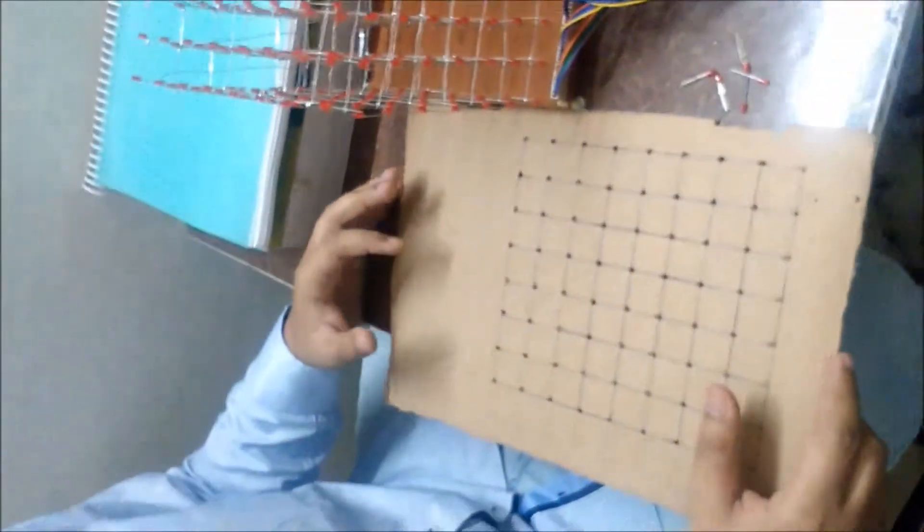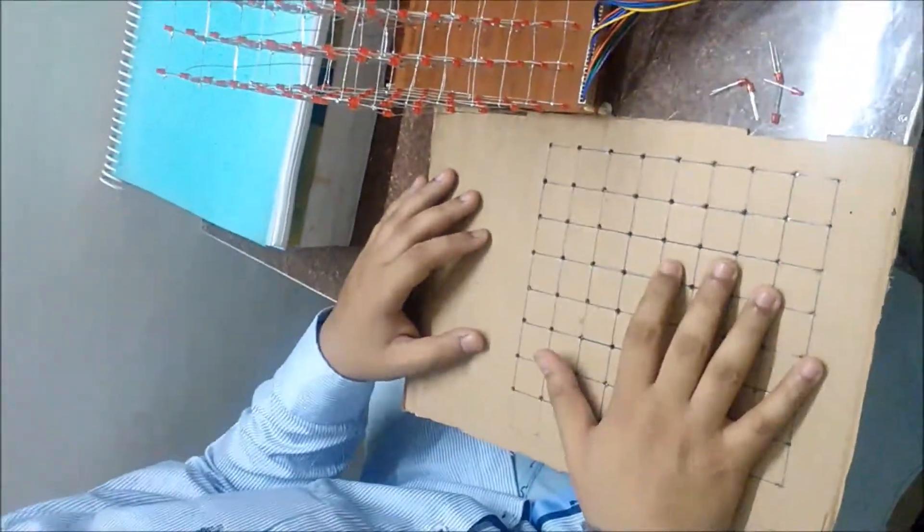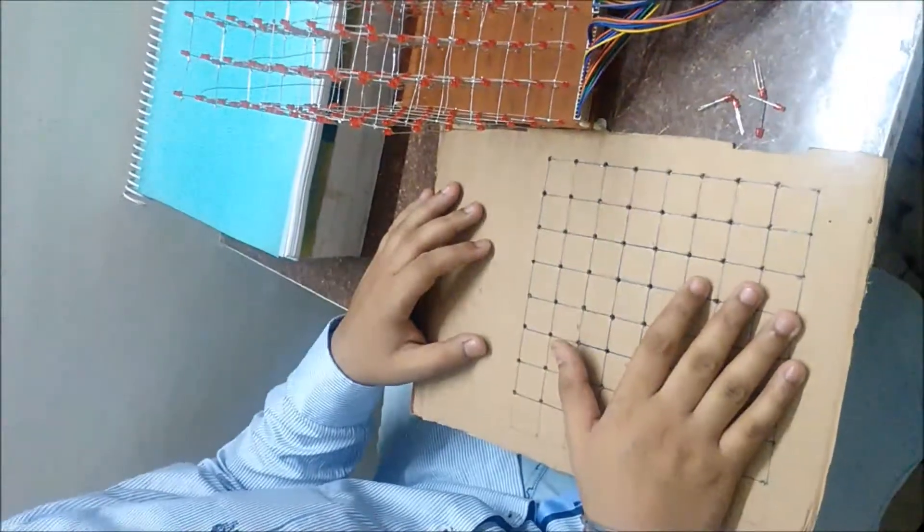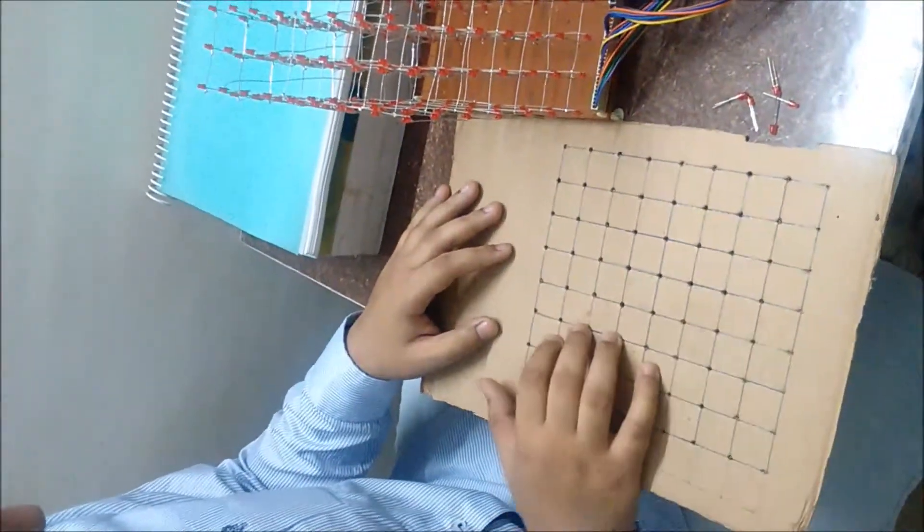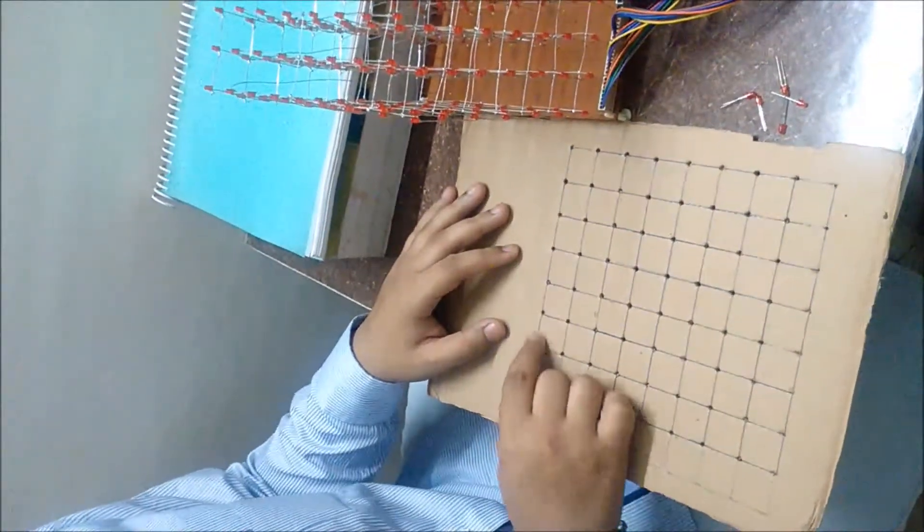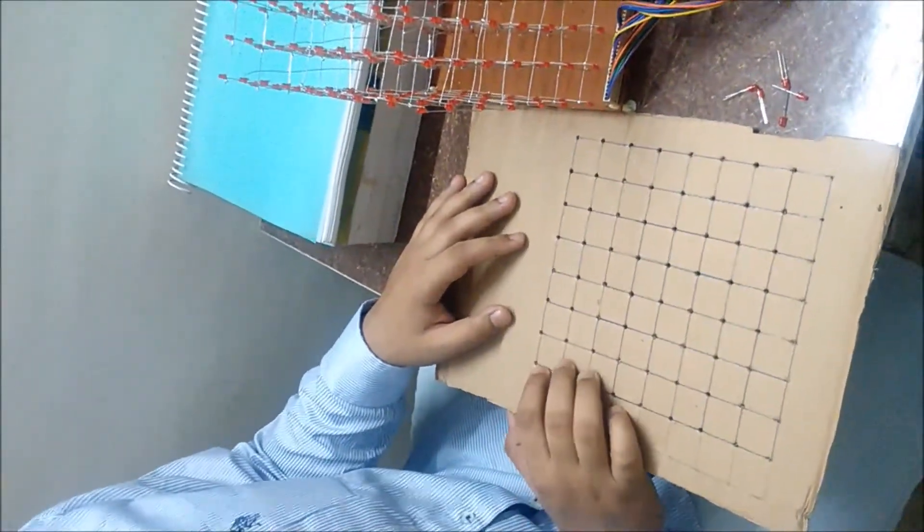First, take a cardboard or wooden board and drill holes in it. The two consecutive holes should have a spacing of 2.4 or 2.5 cm.